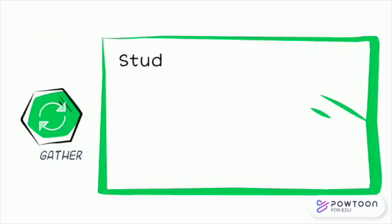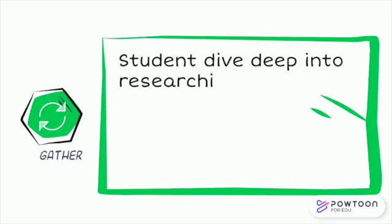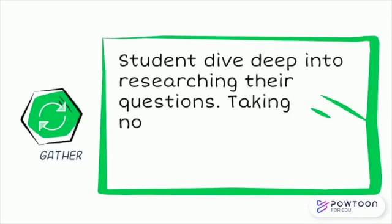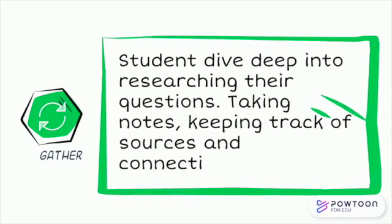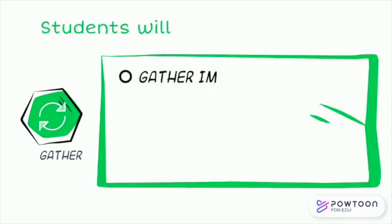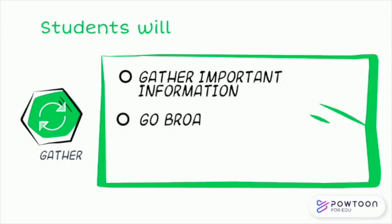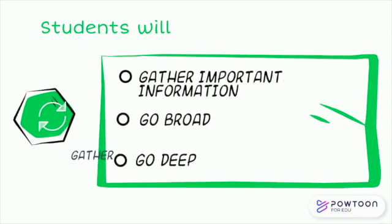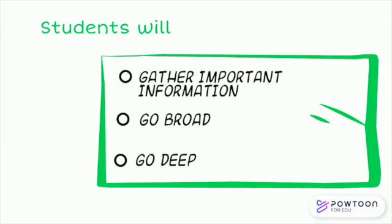During phase five, gather, students begin to dive deeply into their research questions. They take notes, keep track of sources, and connect to content. During this phase, students begin to gather important information — they go broad and then begin to narrow their focus and go deep into the topic.